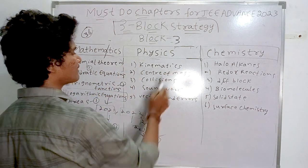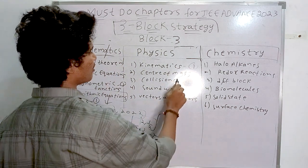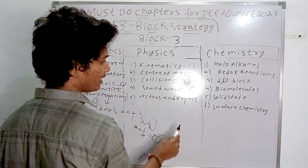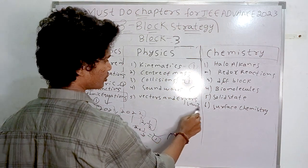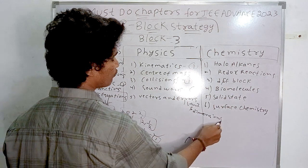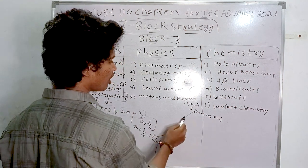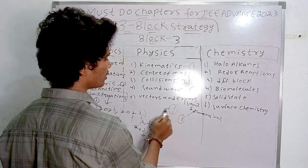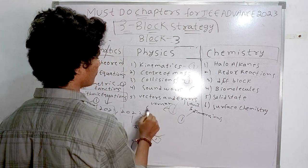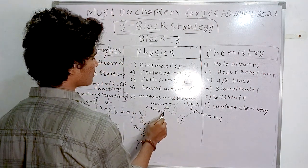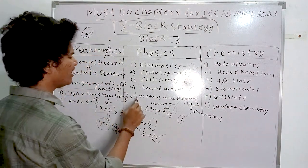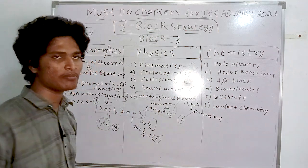Block three physics: kinematics — one question; center of mass and collisions combined — one question; sound waves — one question; errors — one question (from Vernier calipers in 2022); units and dimensions — one question. Vectors had no question in 2022 but can be expected.